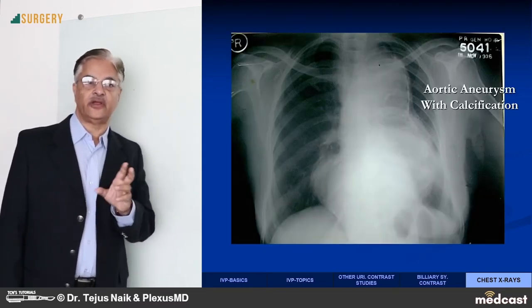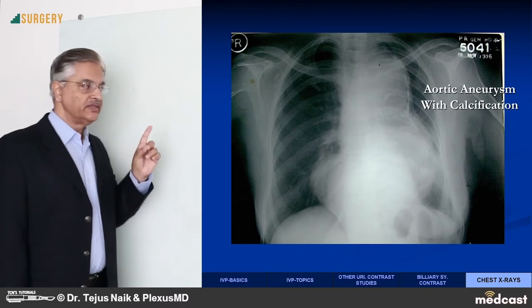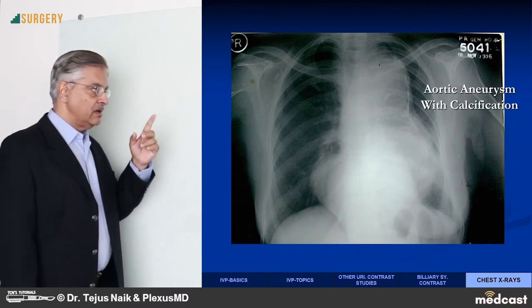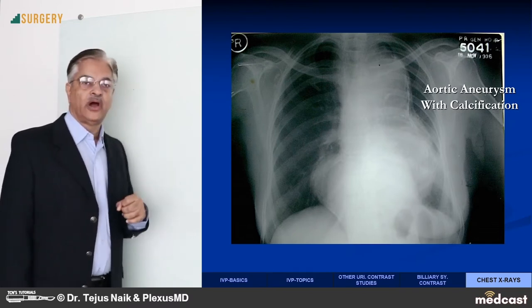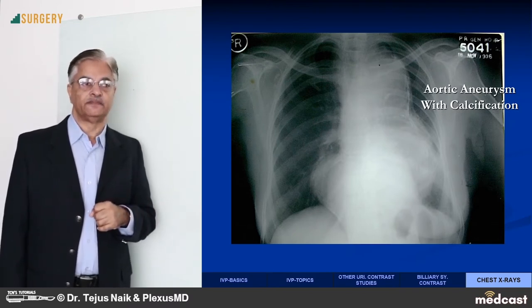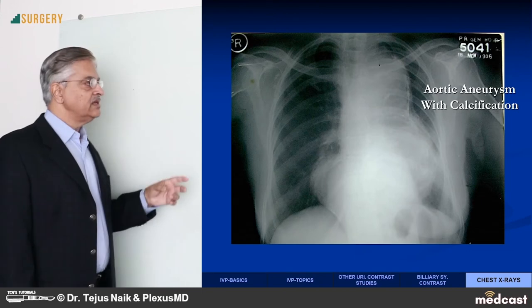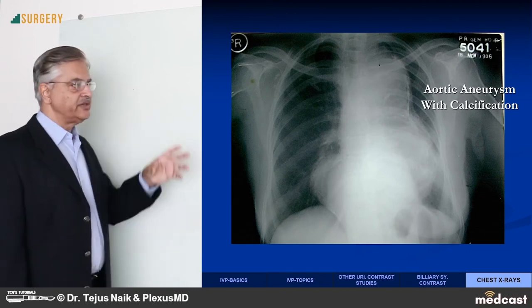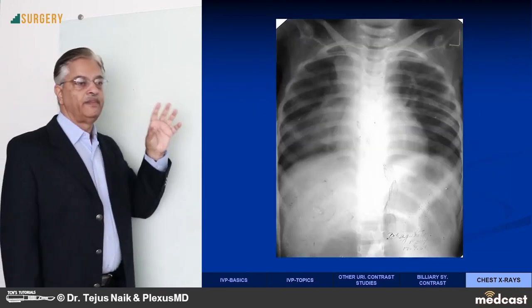This you can see is the aortic knuckle, grossly dilated — an aneurysm of the aorta. You can see a boundary of calcification in this case.